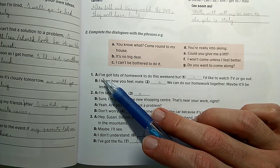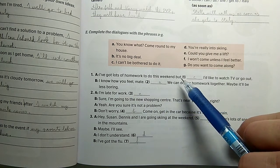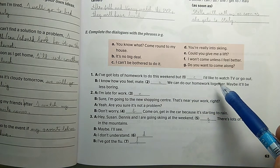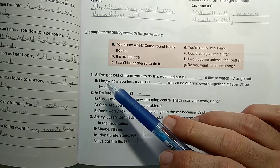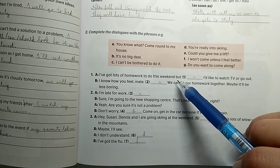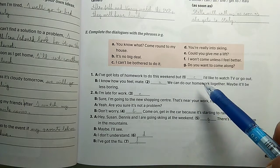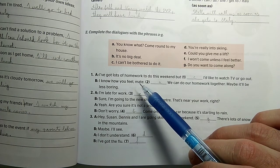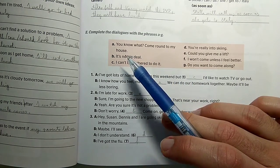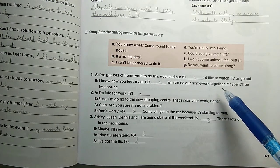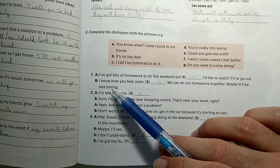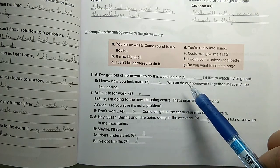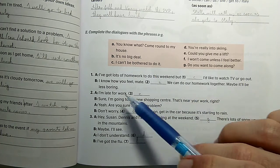Look at the three dialogues. Look at number one. I've got lots of homework to do this weekend. But I can't be bothered to do it. I don't really want to do it. I'd like to watch TV or go out. I've got lots of homework to do this weekend. But I can't be bothered to do it. I'd like to watch TV or go out. I know how you feel, my friend. You know what? Come round to my house. We can do our homework together. Maybe it will be less boring.